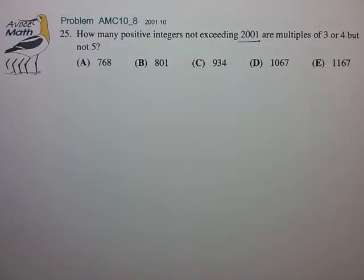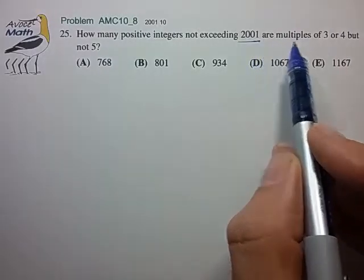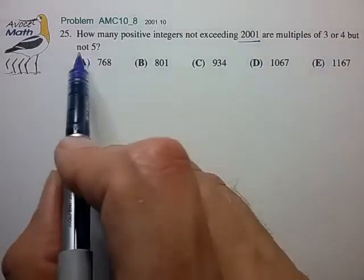Hi, welcome to Avocet Math. In this video we're going to look at one more from our AMC 10 counting series. Let's see what we have. How many positive integers not exceeding 2001 are multiples of 3 or 4 but not 5?